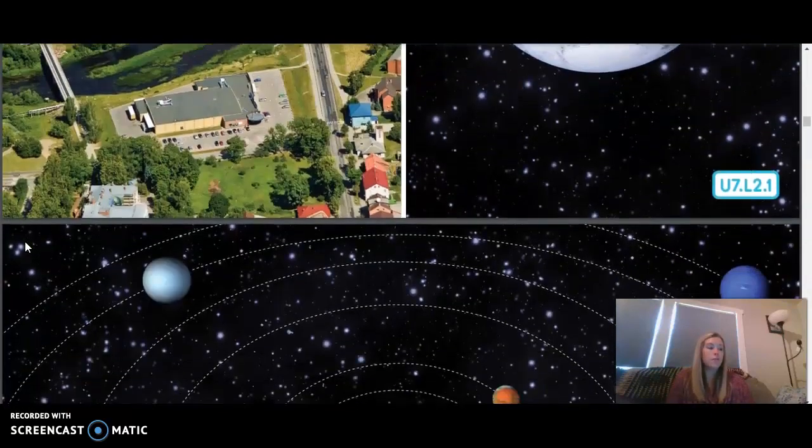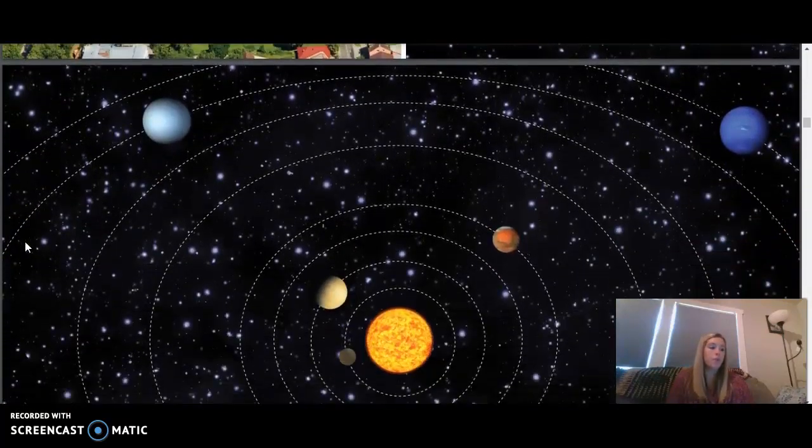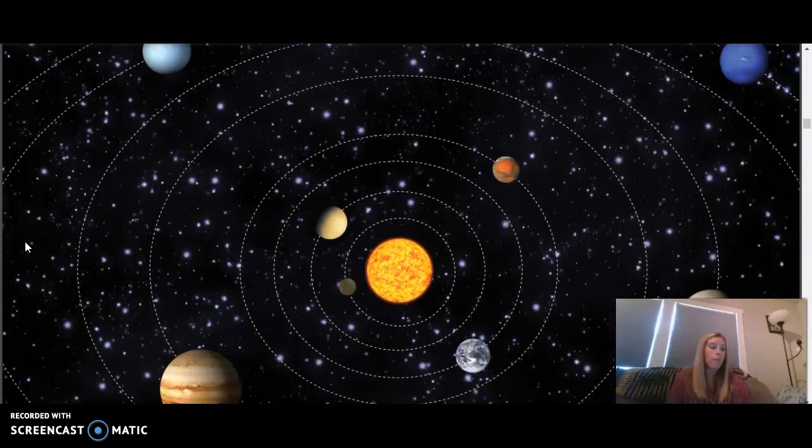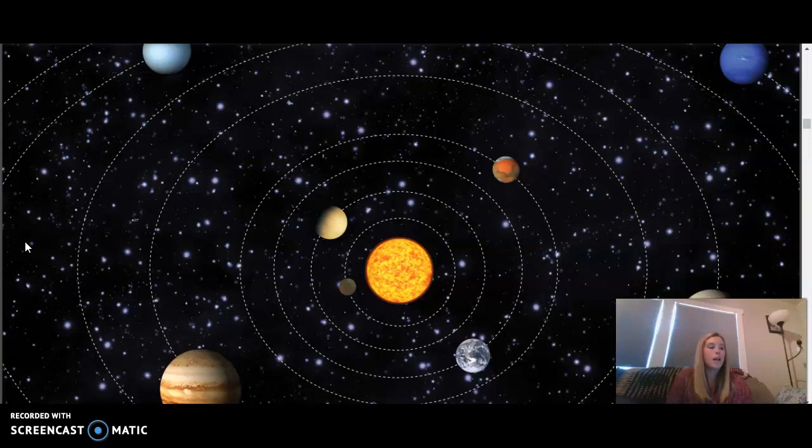Our planetary system is a group of objects in space that have come together to form a neighborhood. A very big, spacious neighborhood. Get it? Spacious? A little interplanetary humor there. All planetary systems have a star at the center and a collection of planets and other smaller objects that orbit around it. We call the planetary system that we are part of our solar system.